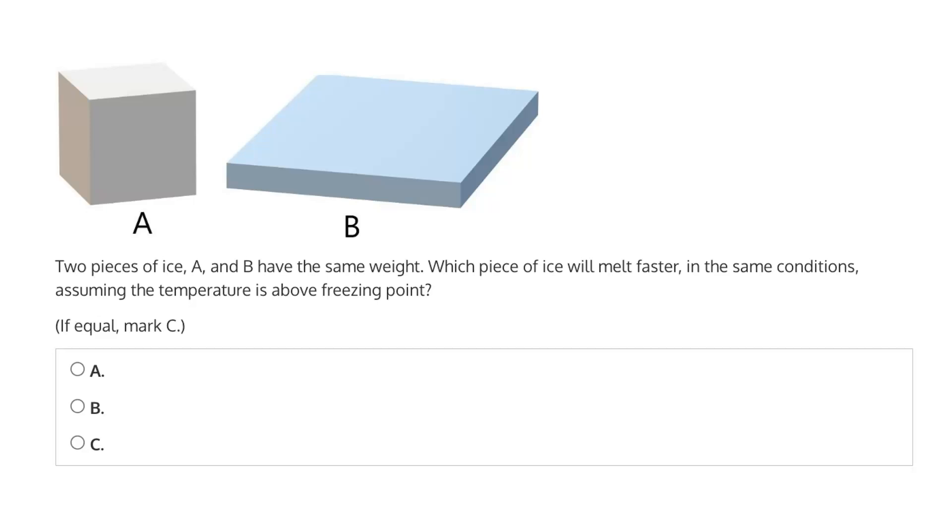And of course, their composition is the same. They're both made of ice, and therefore both made of water. So their main difference is in terms of their shape, where A is a cube and B is a rectangular prism.